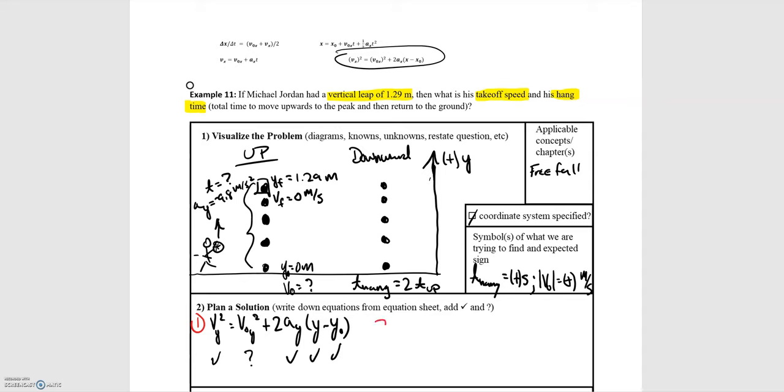we can use that and substitute in to the velocity as a function of time equation, which is: the final velocity is equal to the initial velocity plus the acceleration multiplied by time. And we can use that to solve for the time that it takes for Michael Jordan to go up. Then we just need to multiply by 2 to get the total hang time. So we know the final velocity. We don't know the initial velocity but we can solve for it. We know the acceleration and we are looking for the time. So two equations, two unknowns. We can solve for both.